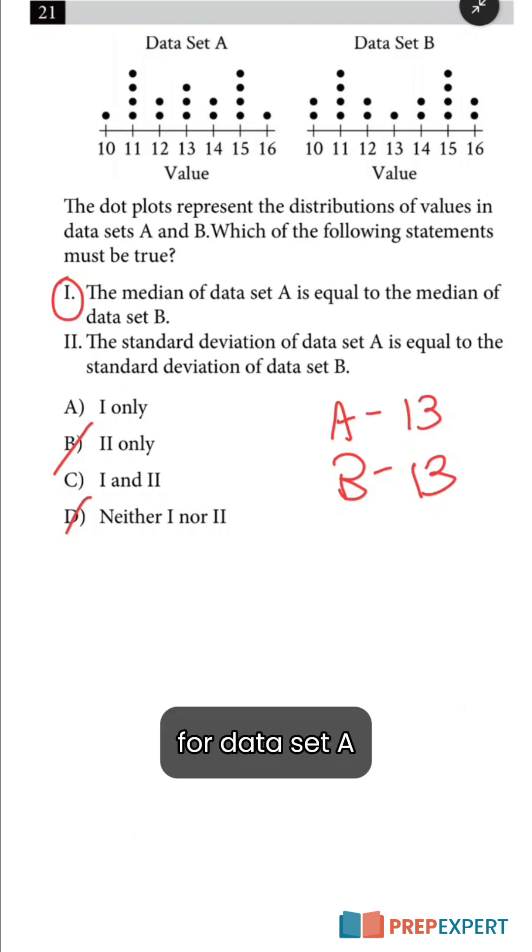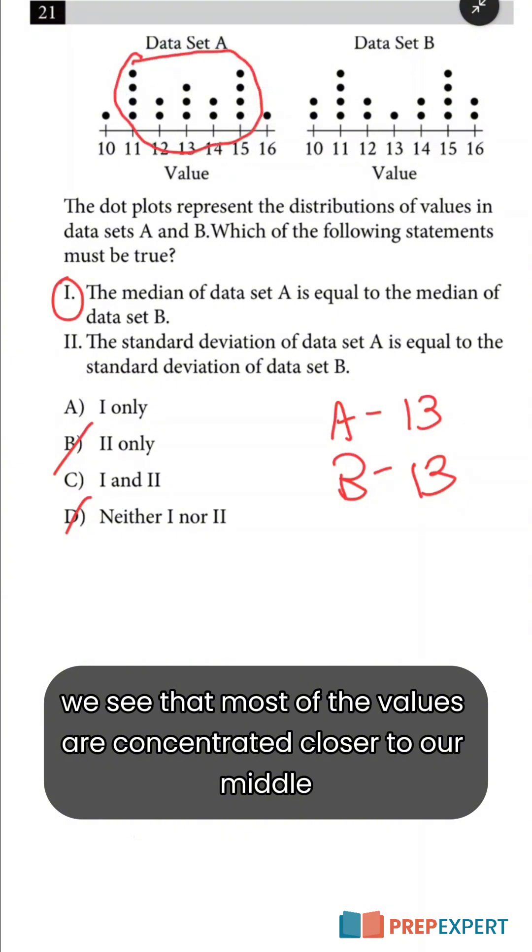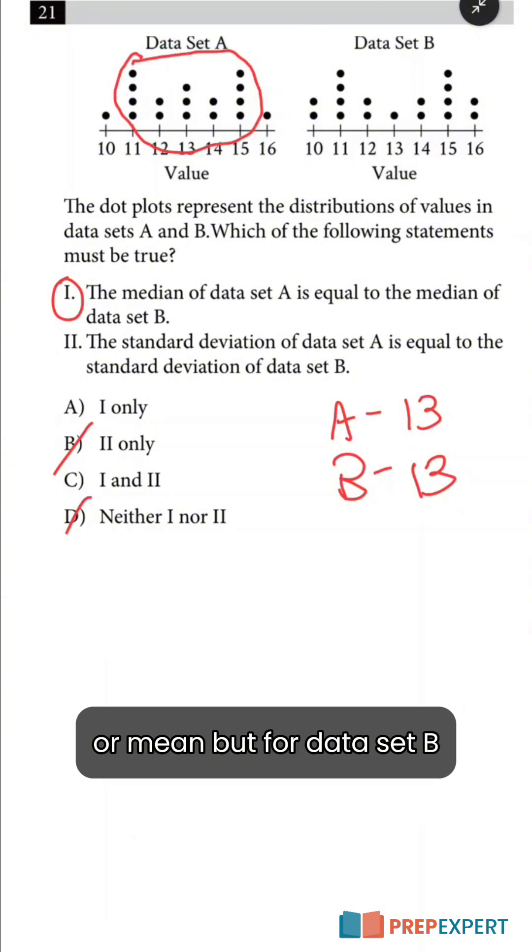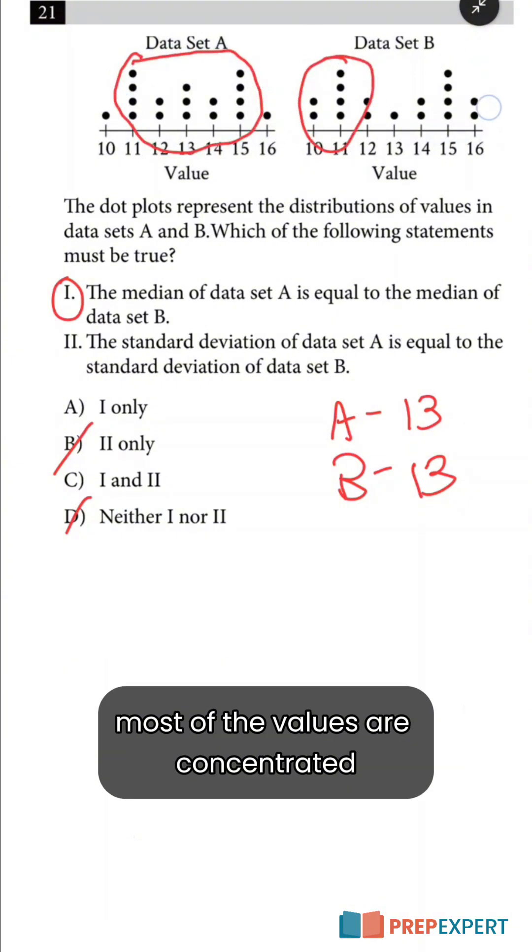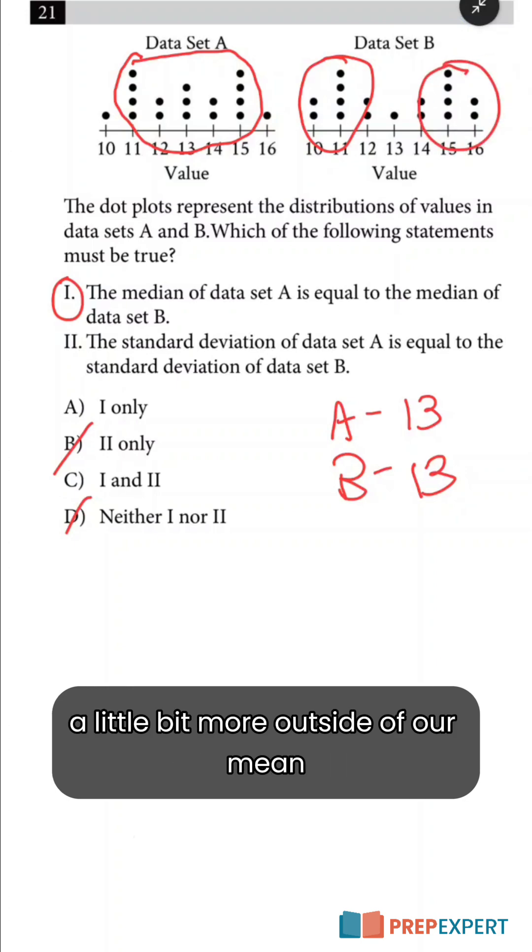For data set A, we see that most of the values are concentrated closer to our middle or mean, but for data set B, most of the values are concentrated more outside of our mean.